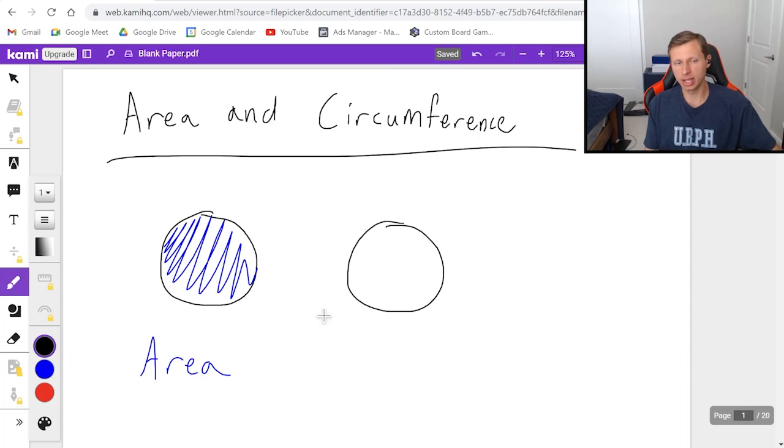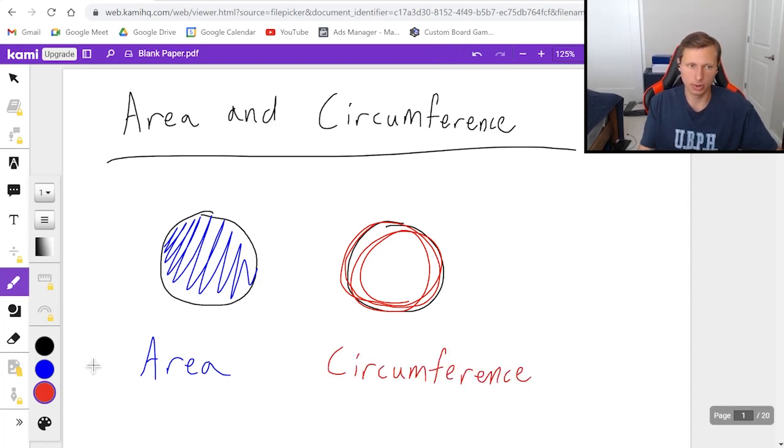and the circumference, if I draw a second circle, again, good enough, the circumference is going to be the outside of the circle. That's what circumference is. Hopefully you already knew that. If not, you know it now.